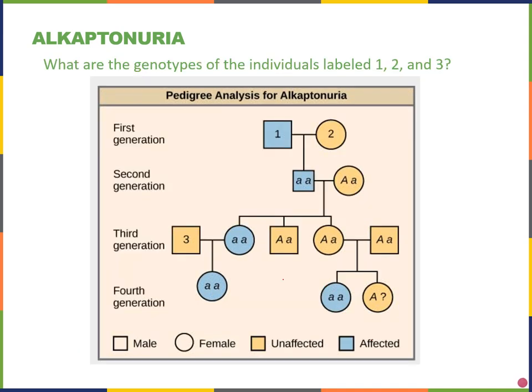Let's try a practice problem from our textbook. The book asks us: what are the genotypes of the individuals labeled one, two, and three? Note that the pedigree in the previous slide may be from a previous edition; the newest edition is corrected. Person one is blue — an affected male with alcaptanuria. Since this is a recessive disorder, he must be small a, small a.